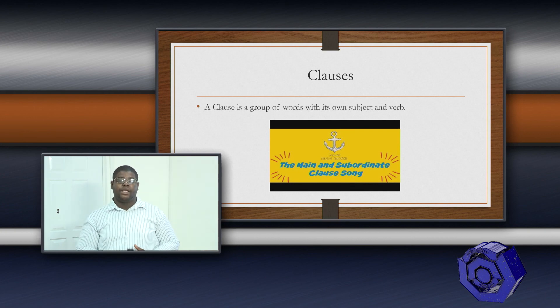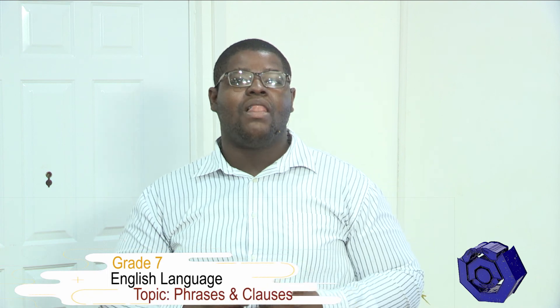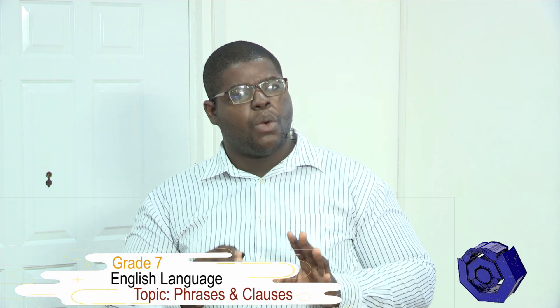So we know what a phrase is — prepositional phrases can act as an adverb or as an adjective. Now let's move on to clauses. A clause is a group of words with its own subject and verb. Note the difference: a phrase does not have a subject and a verb, but a clause has a subject and a verb. I have a video for you about the main and subordinate clause — I hope you enjoy this song.